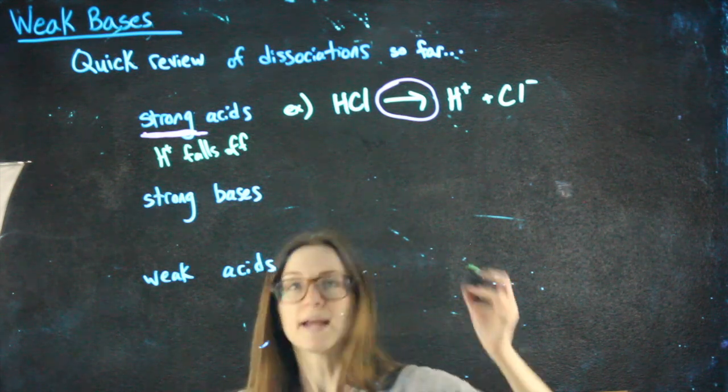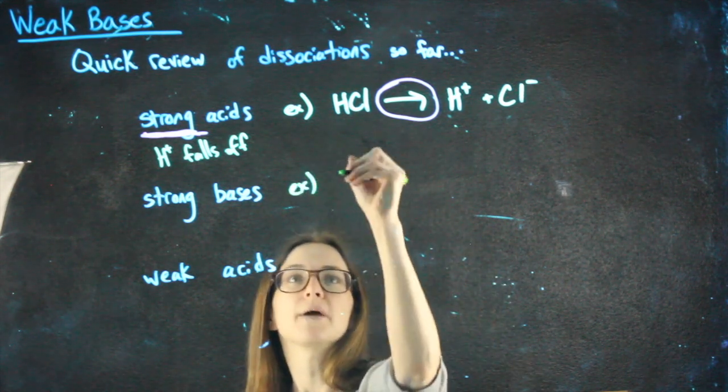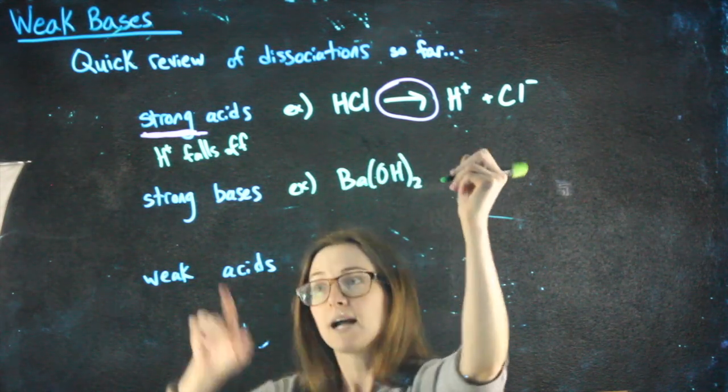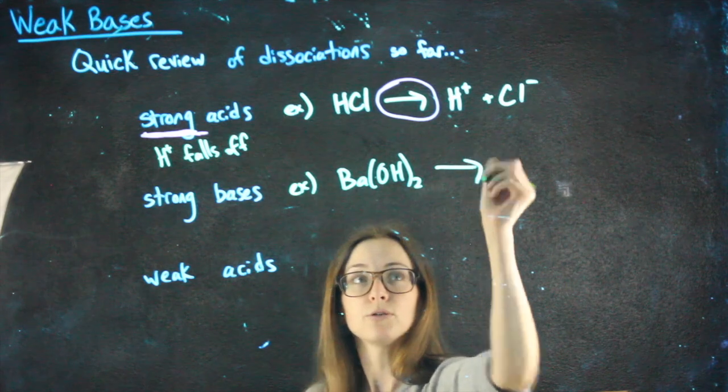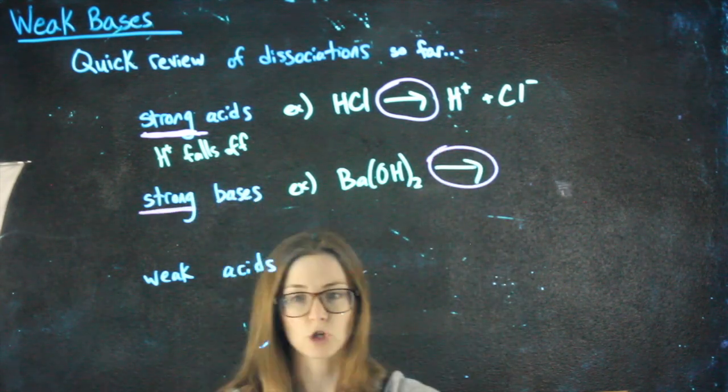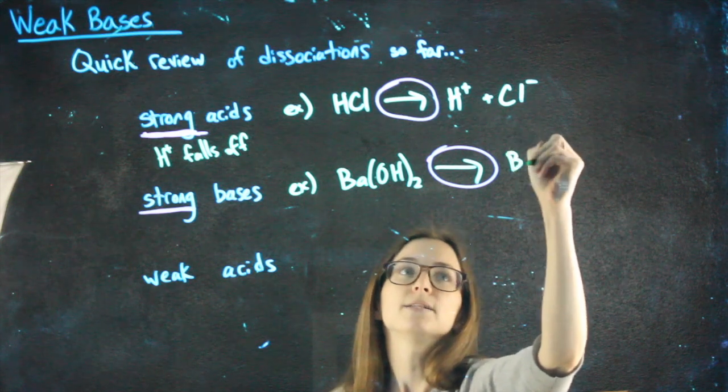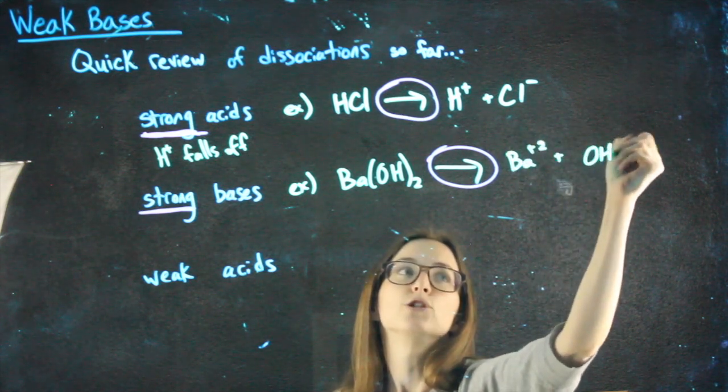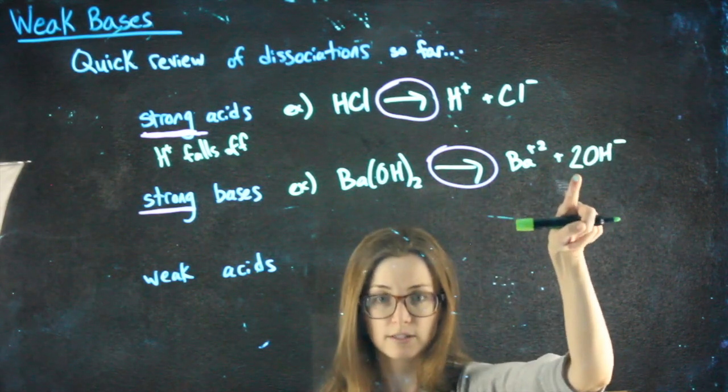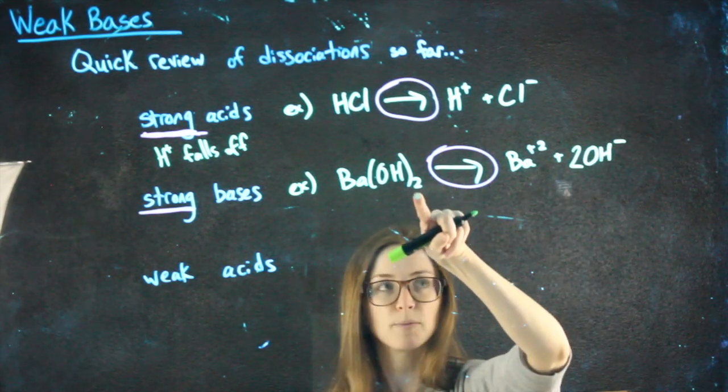If we have a strong base, for example, barium hydroxide, because it is strong, we also use a single arrow. Again, that single arrow is because it's strong. It would split up into Ba plus 2 and OH minus that we balance with a coefficient of 2 in front to balance out that subscript below.